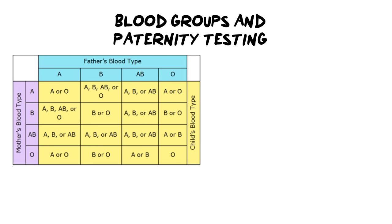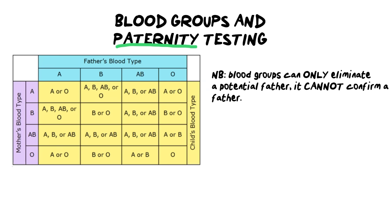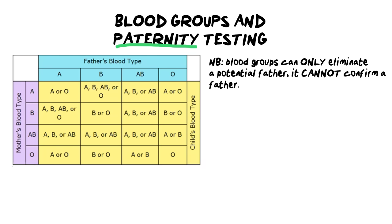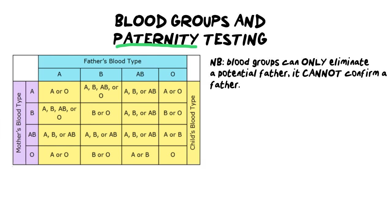Paternity testing refers to testing for someone's father using his genetics and his DNA. We've done this in the DNA videos where we spoke about how you use a DNA profile to determine paternity. You can technically also use blood groups; however, there is a limitation to this, and it can come up as an exam question. The answer is simply that blood groups can only eliminate a potential father — they cannot confirm a father — because everybody else in the world also has similar blood groups.